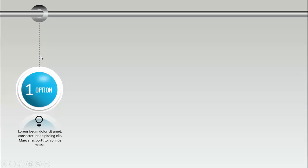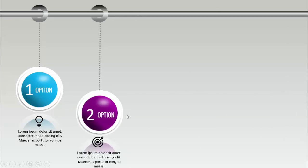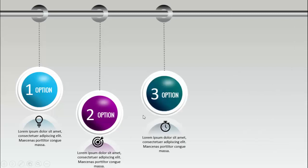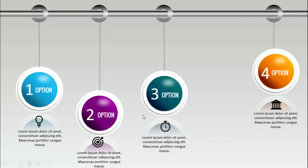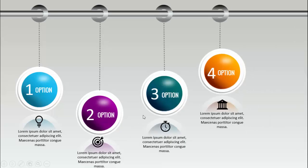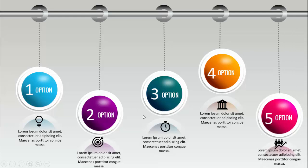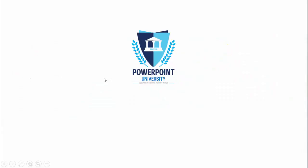This hanging option — option number one — has an icon and a reflection, and at the bottom you can add some detailed text. When I click it will show the second option with a different color combination, then the third, fourth, and fifth. Depending on your requirement you can increase or decrease the number of options.